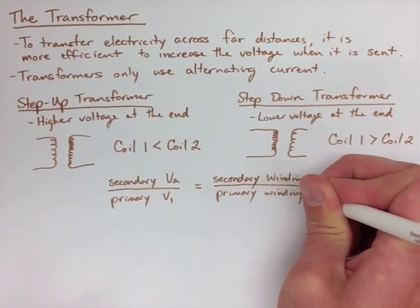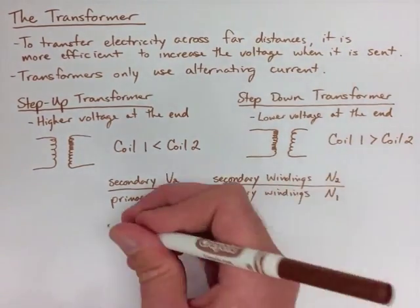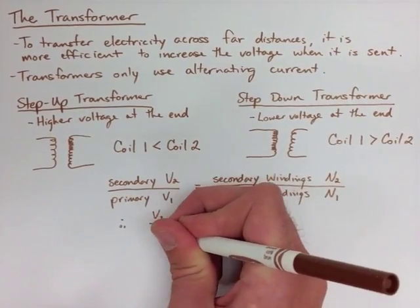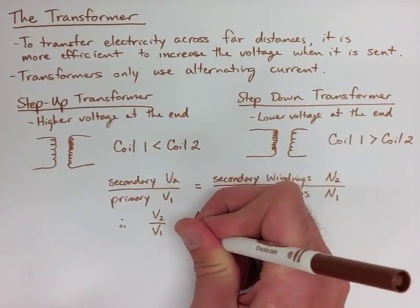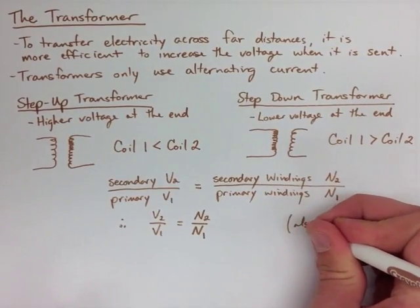What we have is the secondary voltage over the primary voltage equals the secondary windings over the primary windings. Or V2 over V1 equals N2 over N1.